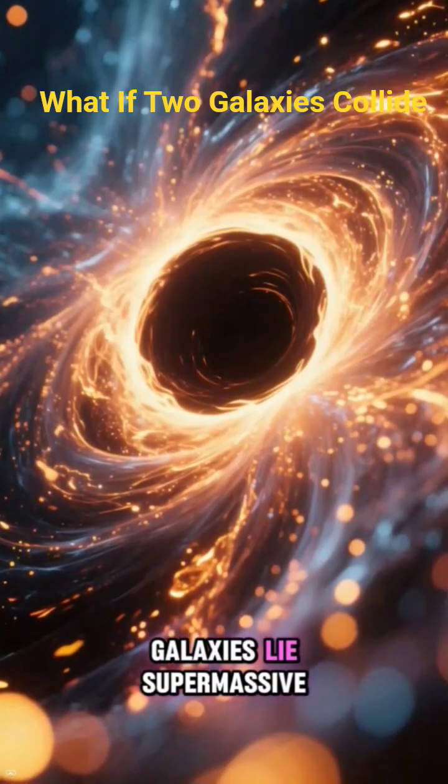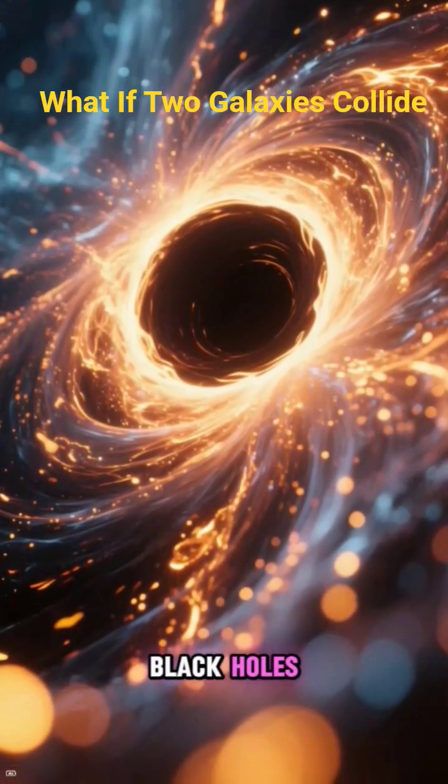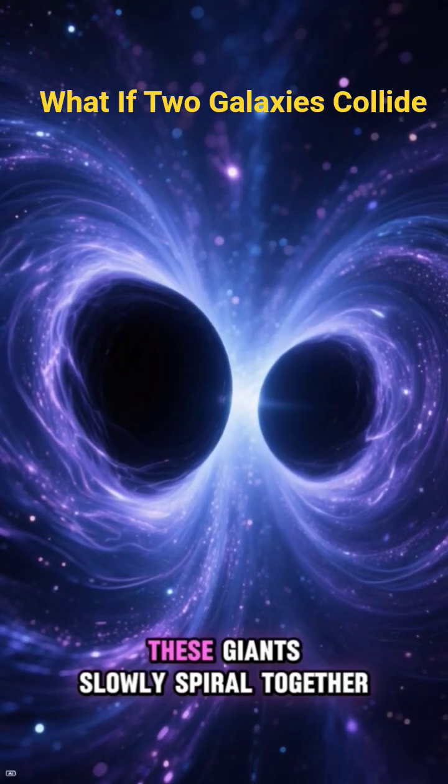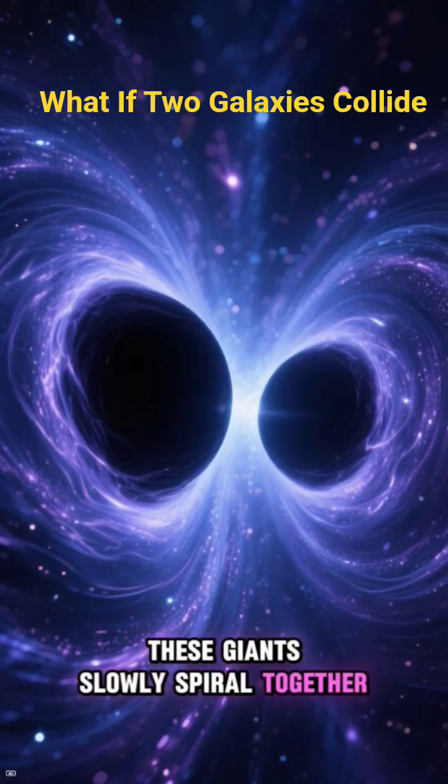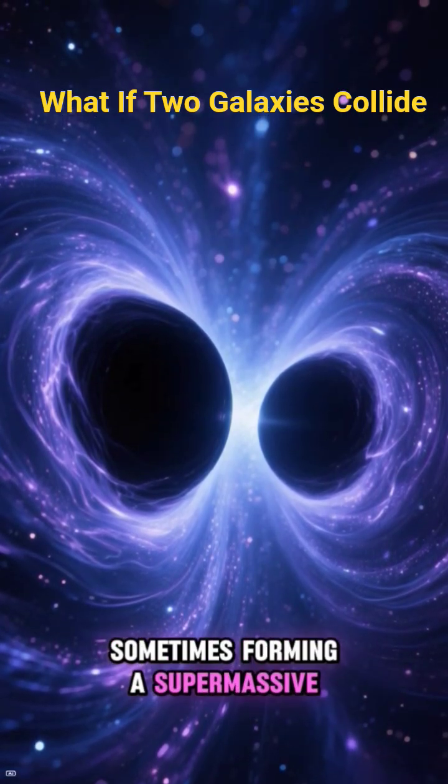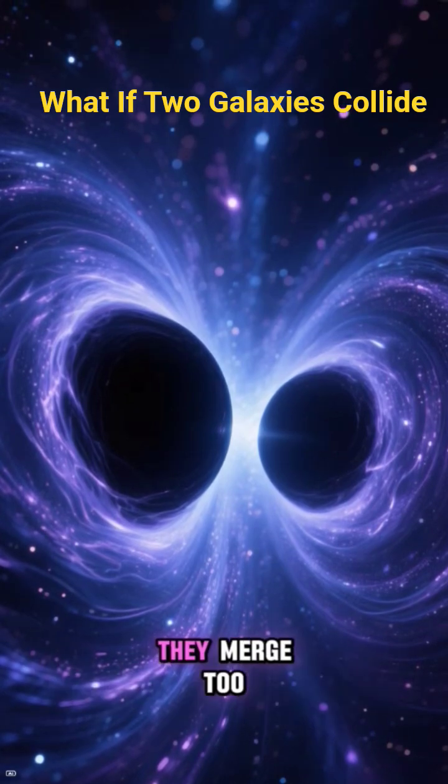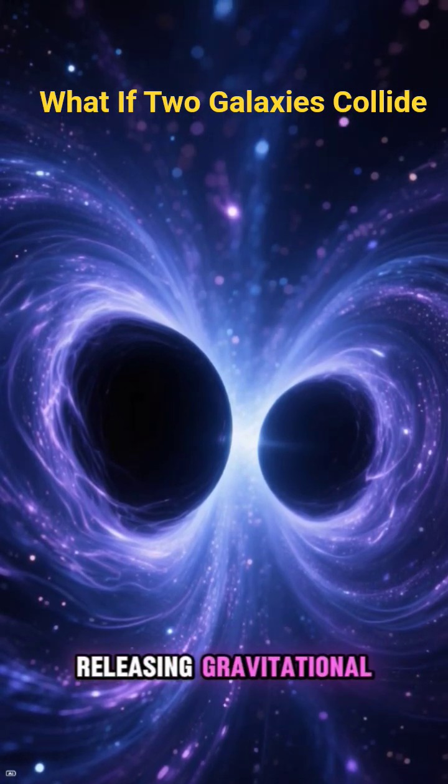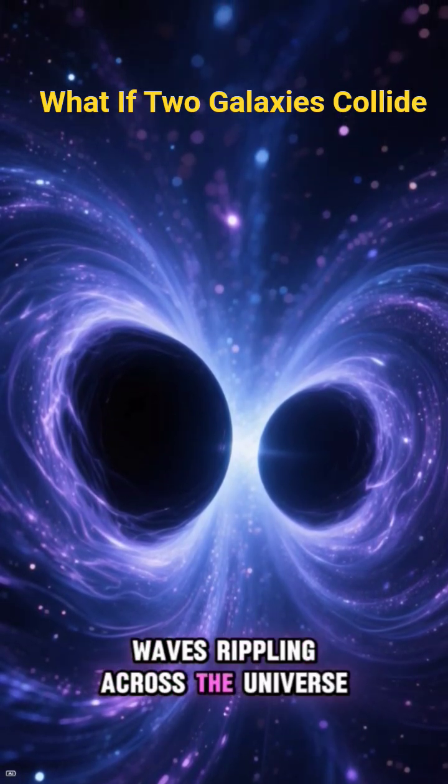At the heart of most galaxies lie supermassive black holes. When galaxies merge, these giants slowly spiral together, sometimes forming a supermassive black hole binary. And eventually they merge too, releasing gravitational waves rippling across the universe.